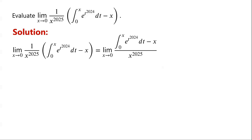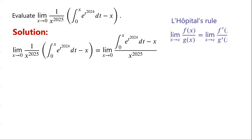So we can calculate the limit using L'Hôpital's rule, which states that the limit of f(x) over g(x) as x tends to c is equal to the limit of f'(x) over g'(x) as x tends to c. That is, taking the derivatives of the numerator and denominator.